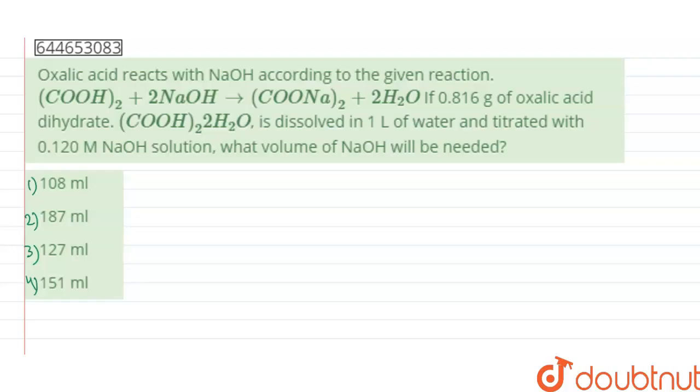Hello guys, the given question says oxalic acid reacts with NaOH according to the given reaction. If 0.816 grams of oxalic acid dihydrate, that is (COOH)2·2H2O, is dissolved